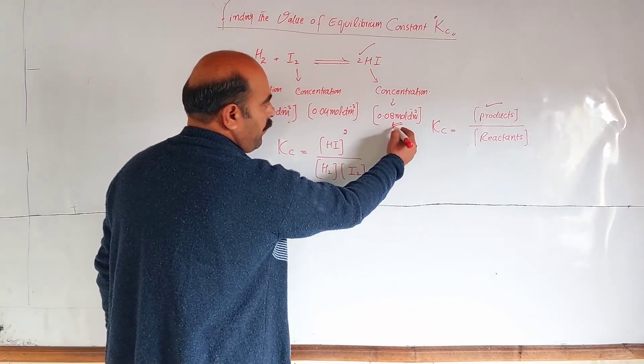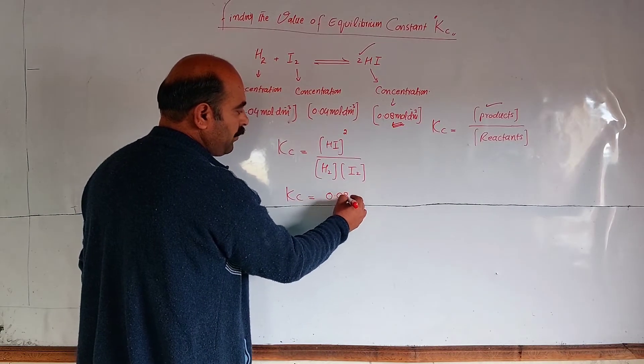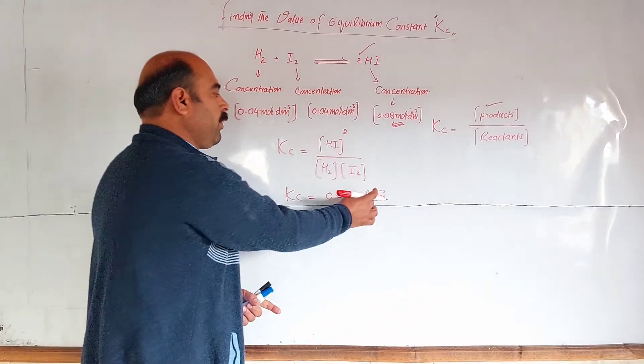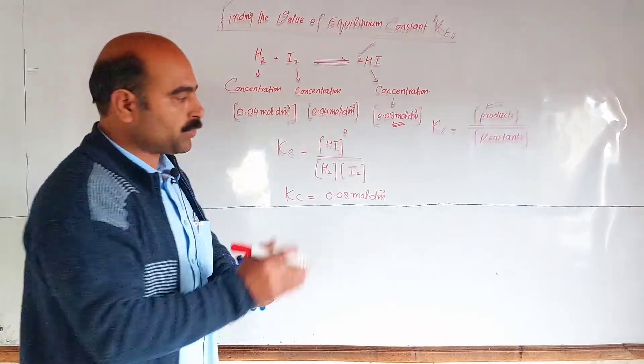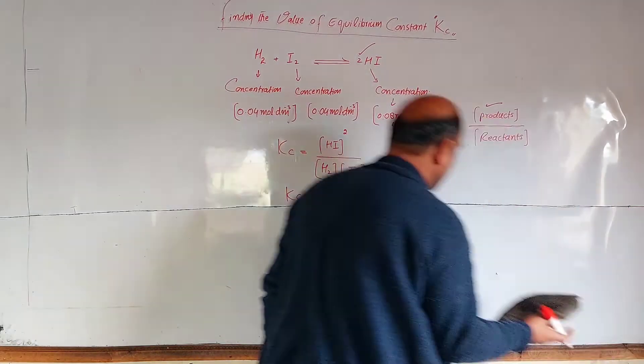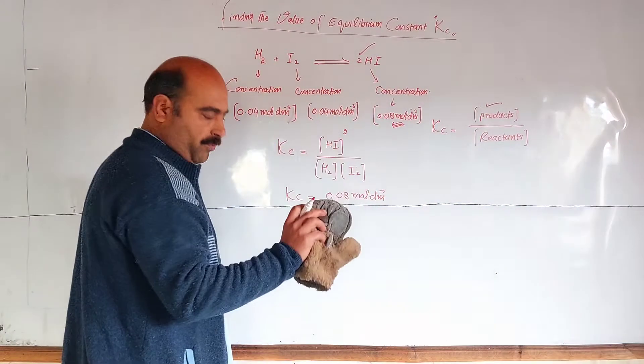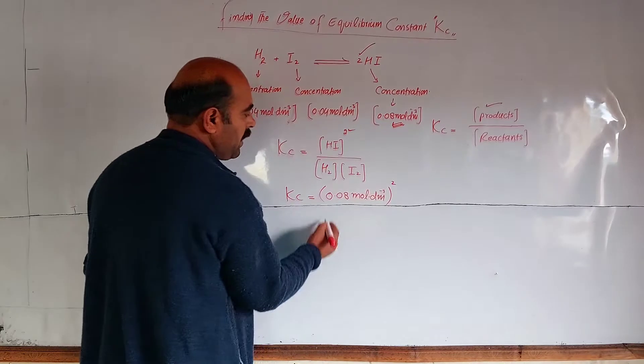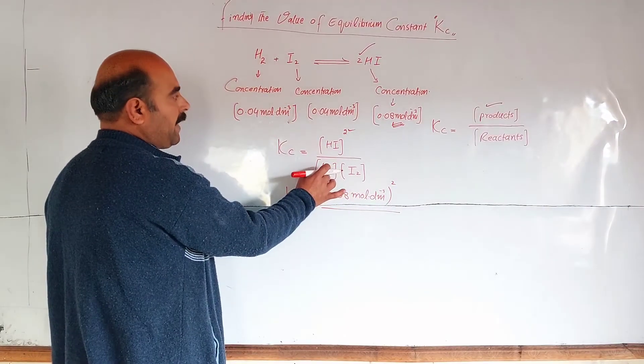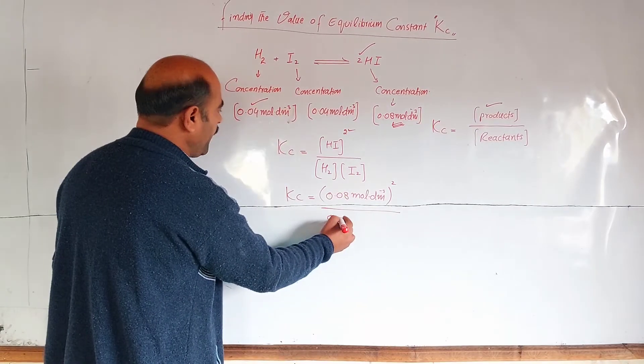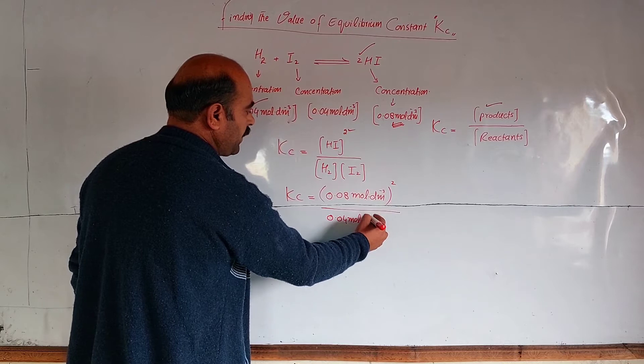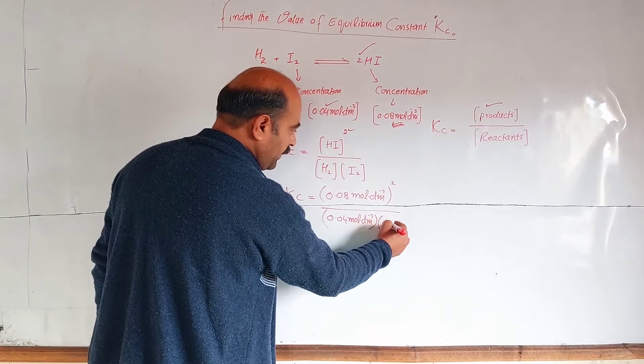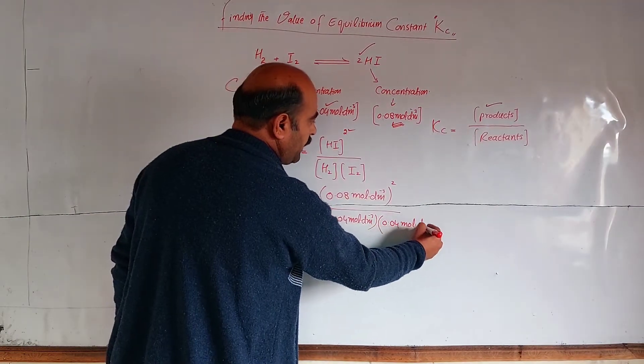0.08 mole per decimeter cubed in square brackets, to the power 2, divided by concentration of hydrogen, which is 0.04 mole per decimeter cubed, multiplied by iodine concentration, which is 0.04 mole per decimeter cubed.